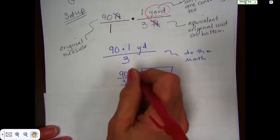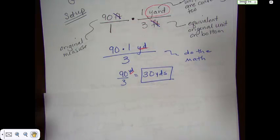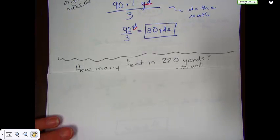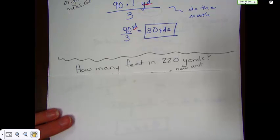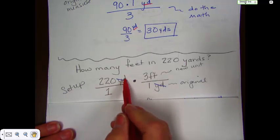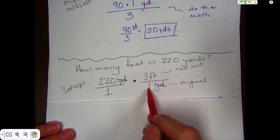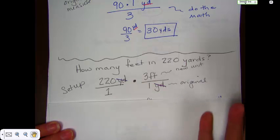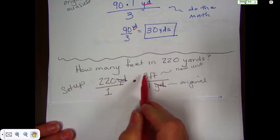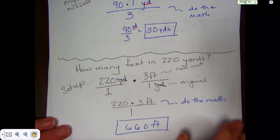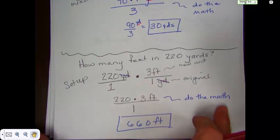Notice that we keep this measurement. If you start dropping those off, you're going to get confused and you're going to lose them. And, then you will not have the right answer. Okay, let's do one more. How many feet in 220 yards? Okay. Well, we start the same way we had before. We have 220 yards over 1, 3 feet over 1 yard. Cross out the yards. They go away. We're left with 220 times 3 feet over 1. Do the math. You get 660 feet.